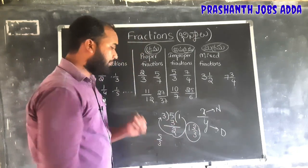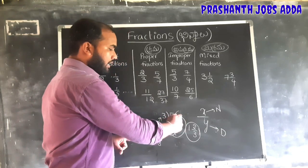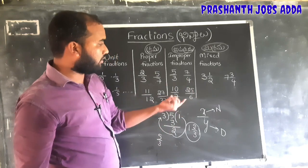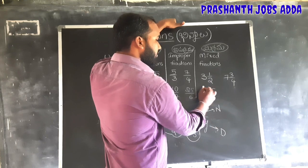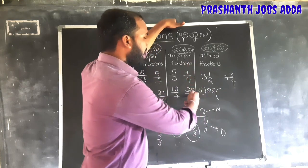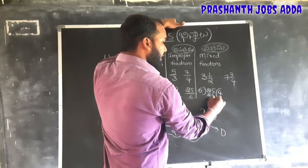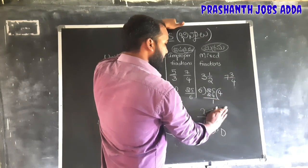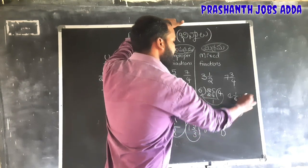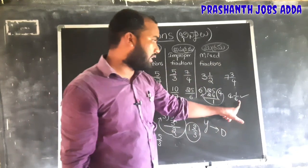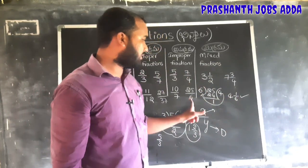Another example: 25 by 6. Divide 25 by 6 — 6 times 4 is 24, remainder is 1. So 25 by 6 as a mixed fraction is 4 and 1 by 6. Converting back: 6 times 4 is 24, plus 1 is 25, over 6 — giving us 25 by 6. This confirms the conversion.